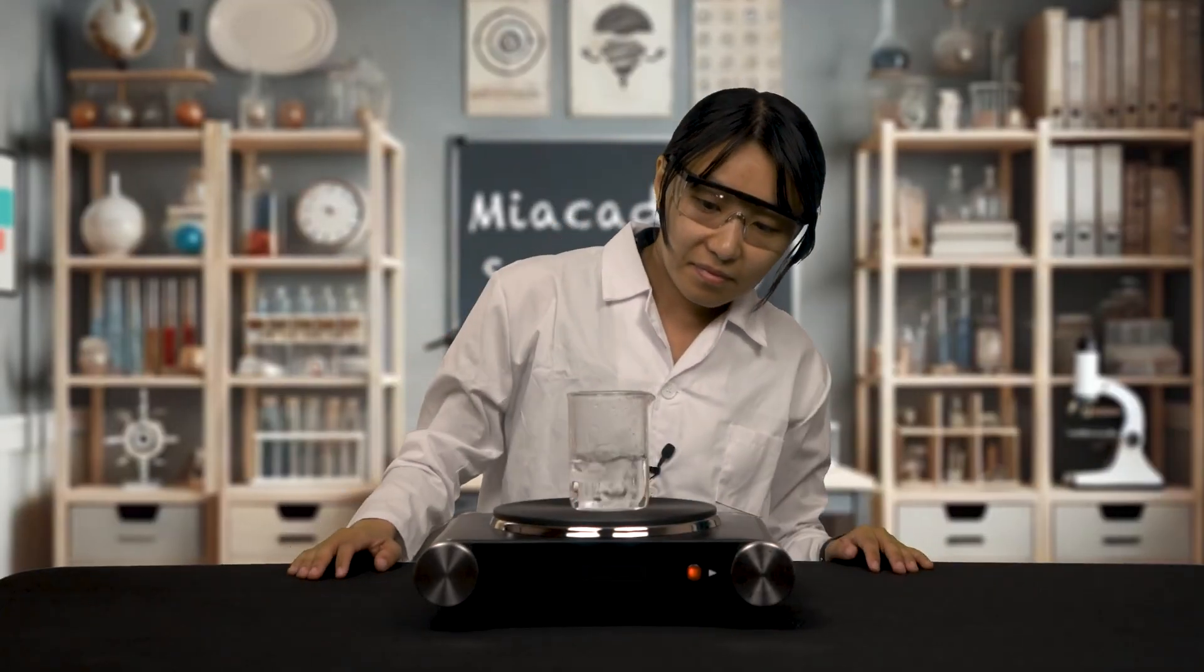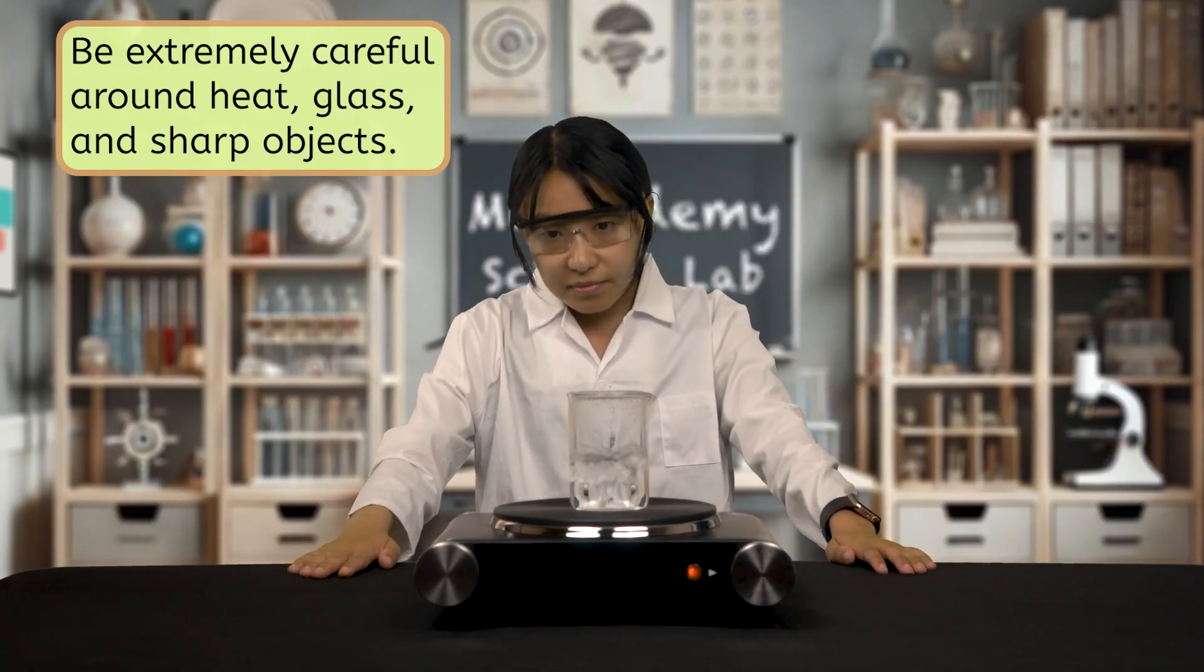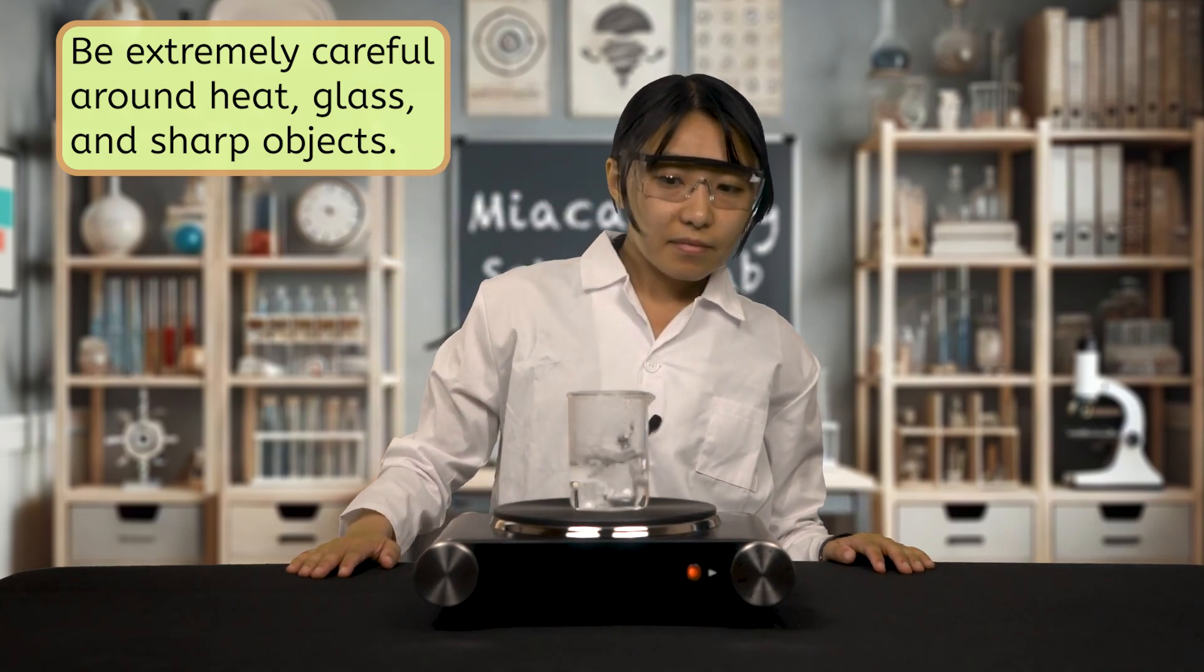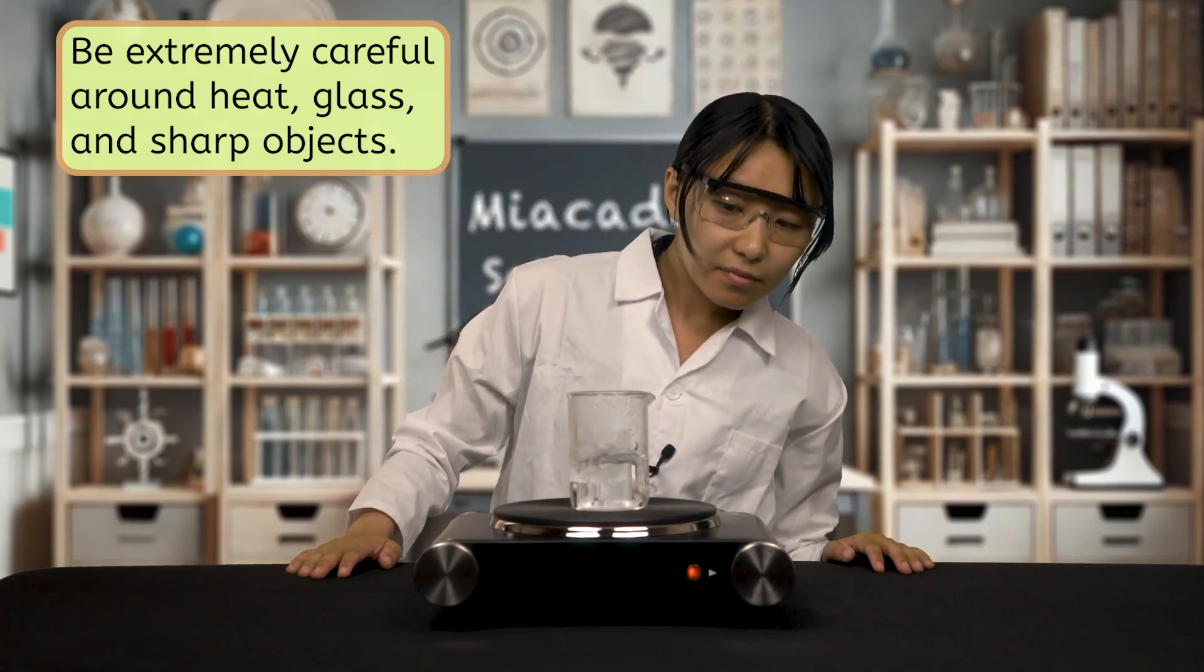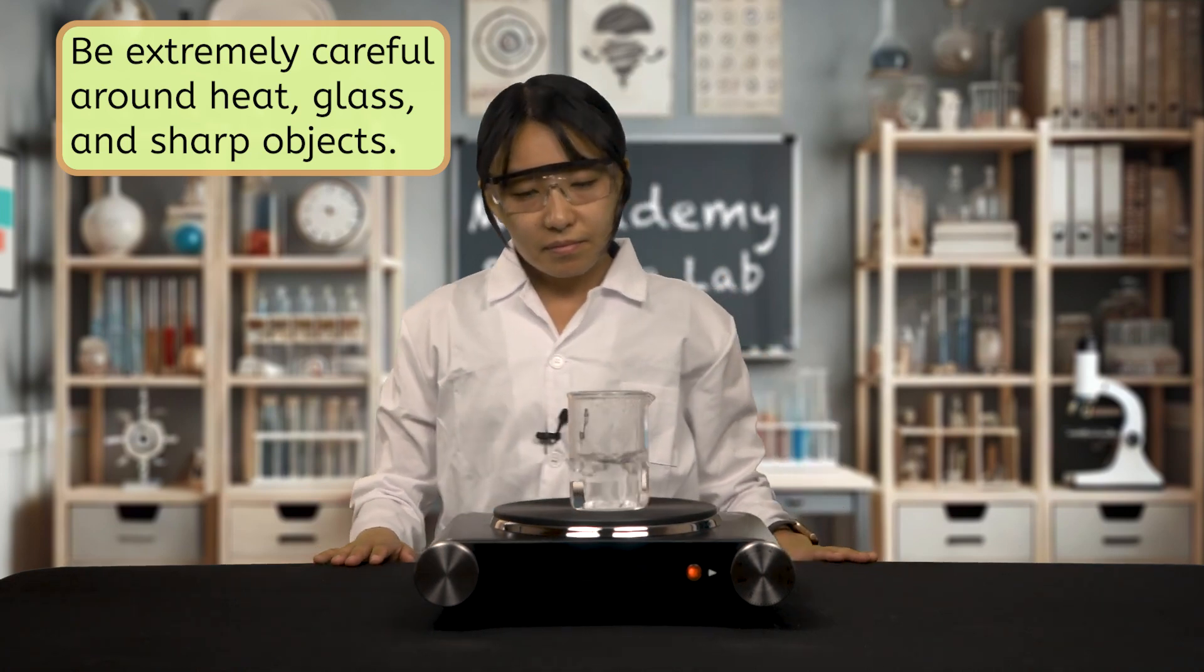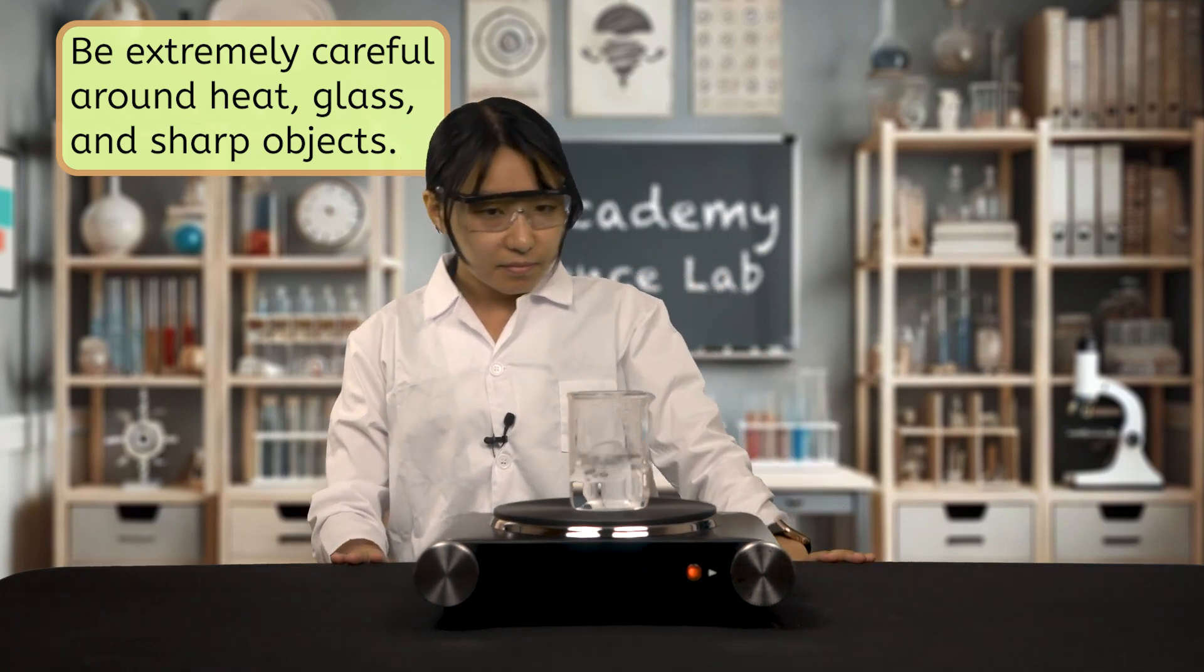Finally, to prevent any emergencies, be extremely careful around heat, glass, and sharp objects. Never leave a flame or boiling pot of water unattended and never look directly into glassware that's being heated. Yes, even if you're wearing goggles. Building these safety habits will help set you up for success as you complete lab investigations. But what happens when you do everything right and an accident happens?